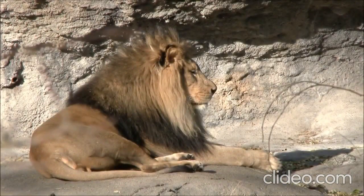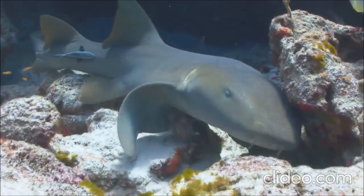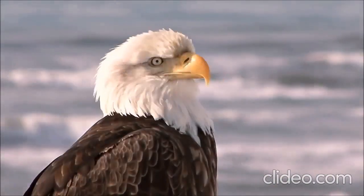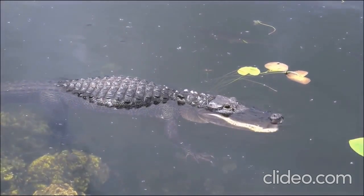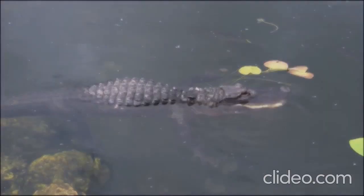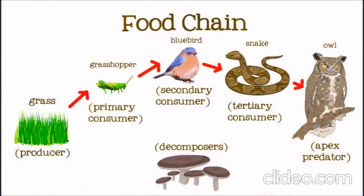You probably recognize a lot of apex predators, like lions, sharks, eagles, and crocodiles. Just because they don't get eaten doesn't mean that they don't contribute to the food chain, however. When an animal dies, their body is broken down by decomposers — usually bacteria and fungi that break down dead plants and animals into nutrients in the soil, which in turn help the plants at the beginning of the food chain to grow. It's the circle of life!